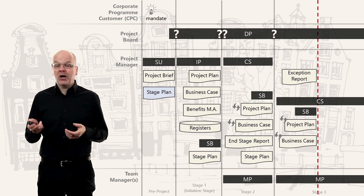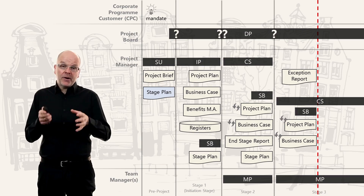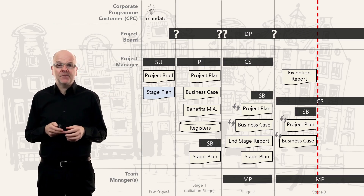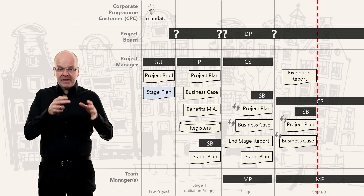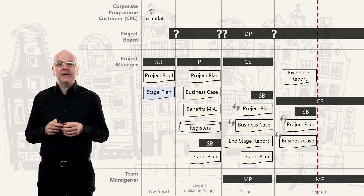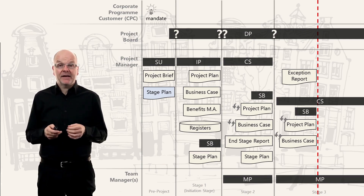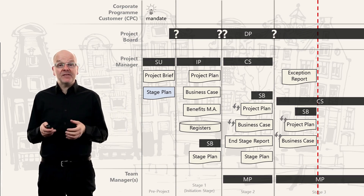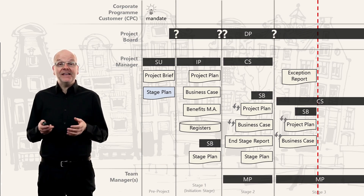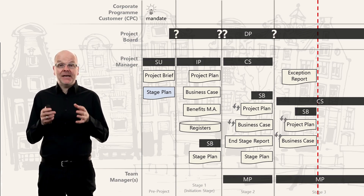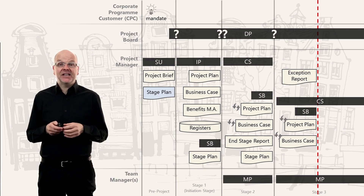In the project plan, the first thing updated is the status of the products completed so far in the current stage — perhaps 50 percent have been completed. We also update the end date of the current stage plan, as it will now be further forward than before. We update the business case too, since costs will increase due to the exception, and we may update the return on investment calculation. The project plan and business case are living documents giving an up-to-date picture at the end of each stage.